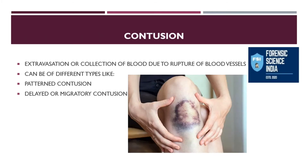The second type of blunt force trauma is contusion, also known as a bruise. It is caused due to extravasation or collection of blood due to the rupturing of blood vessels. It gives a black color formation or a greenish-yellow appearance and can be of different types, like patterned contusion or delayed/migratory contusion.